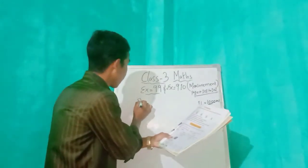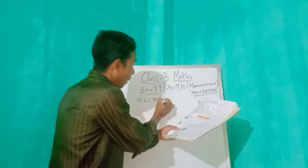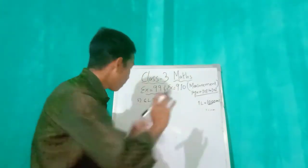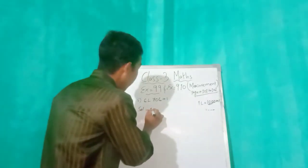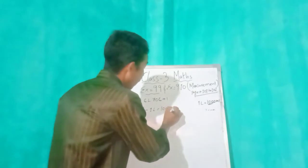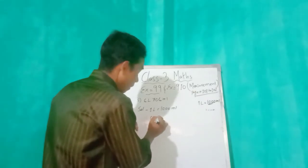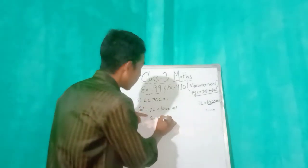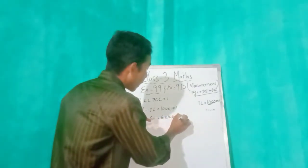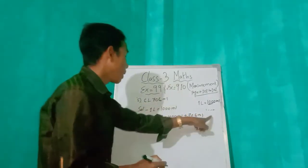Number 5: the question is 6 liters 706 mL. Let's see the solution. As we know, 1 liter equals 1000 mL, so therefore we have 6 L. Six liters equals 6 into 1000 mL, plus 706 mL.